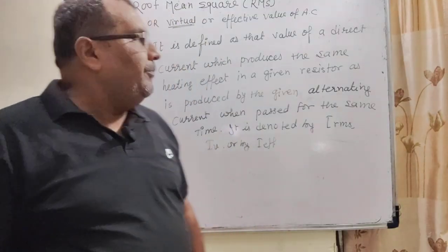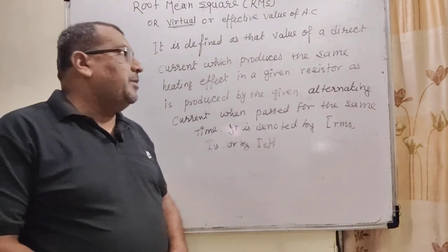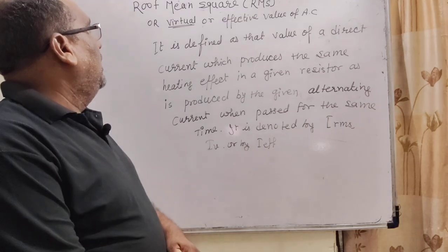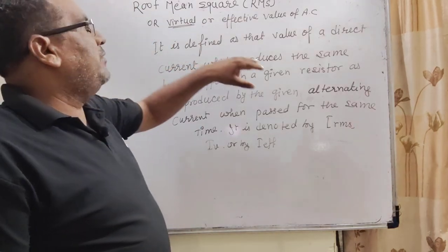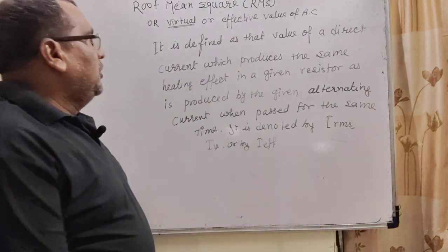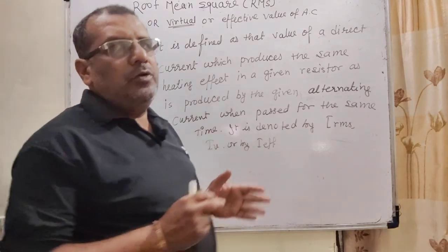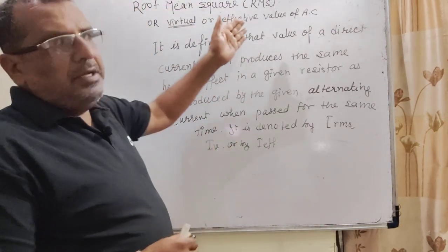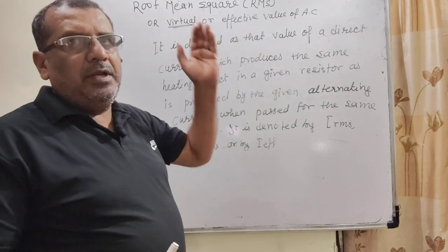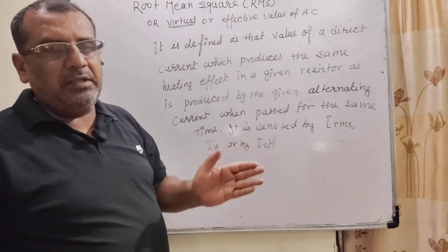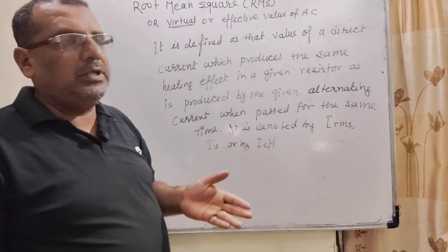Thank you once again. Now we will proceed to the next chapter. Here we go — Root Mean Square value, RMS. So the first thing is RMS value. There are some names for this concept that you can see here.